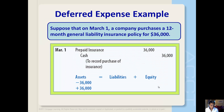Now suppose that on March 1st, a company purchases a 12-month general liability insurance policy for $36,000. This transaction debits an asset — prepaid insurance — which will be used over the one-year period, and credits the cash paid for the policy.